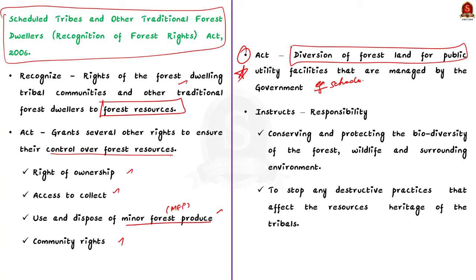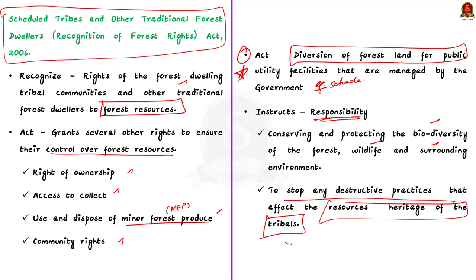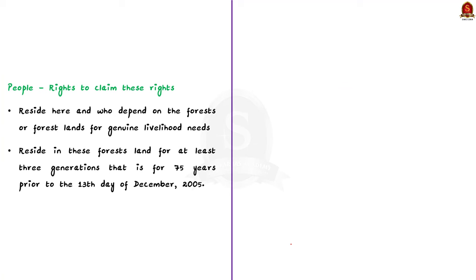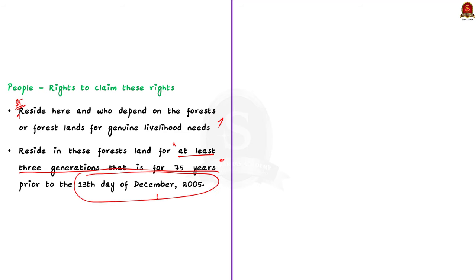The act instructs Gram Sabhas and rights holders with the responsibility of conserving and protecting the biodiversity of forests, wildlife, and the surrounding environment. They are also given responsibility to stop any destructive practices that affect the resources or cultural or natural heritage of tribals. Regarding eligibility, all members or communities of scheduled tribes who primarily reside in and depend upon the forest for genuine livelihood needs are eligible. Rights can also be claimed by communities who had resided in forest land for genuine livelihood reasons for at least three generations — that is 75 years — prior to 13th December 2005, which is the cutoff date for this act.